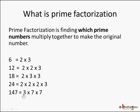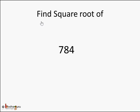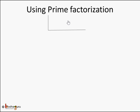Now let's use the prime factorization method to find the square root of a number. Let's say we have to find the square root of 784. In prime factorization, we put the number in a division bracket and start with 2, the smallest prime number. We start with 2 because 784 is an even number. So 784 divided by 2 gives us 392.